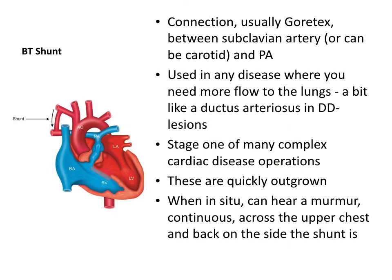A BT shunt is essentially an artificial form of the ductus arteriosus, though it will be outgrown fairly quickly. Rather than using an artery, we generally use a Gore-Tex connection placed between the subclavian artery and the pulmonary artery - often on both sides now. There is no valve in it, so flow is continuous and you get a continuous murmur. It is used in duct-dependent lesions or as an interim measure before a more definitive operation, like in tetralogy of Fallot, and is stage one in many complex cardiac surgery pathways.